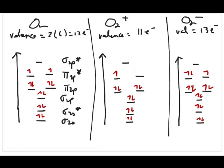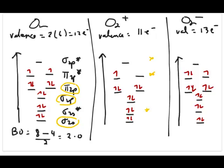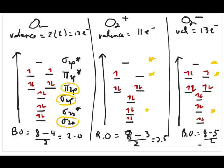Now we move on to bond order for each species. Bond order is the number of electrons in bonding molecular orbitals minus the number in antibonding molecular orbitals, divided by 2. The bonding orbitals are those without stars. For O2: 8 minus 4, divided by 2 equals 2.0. For O2+: 8 minus 3, divided by 2 equals 2.5. For O2-: 8 minus 5, divided by 2 equals 1.5.